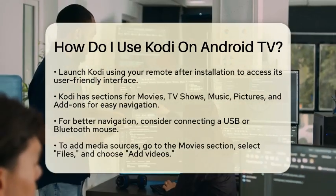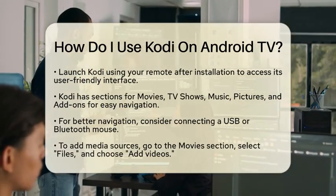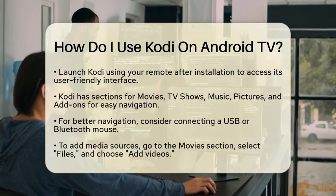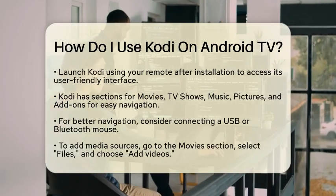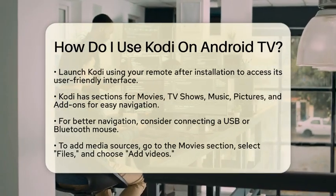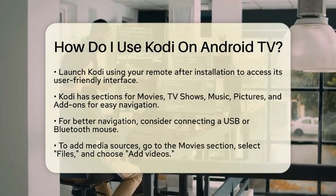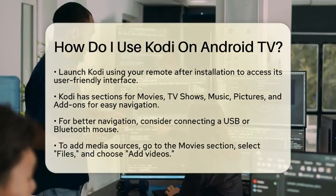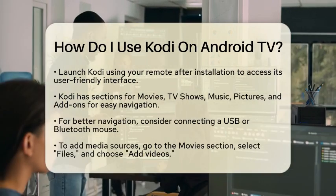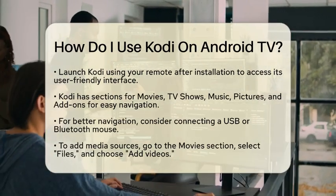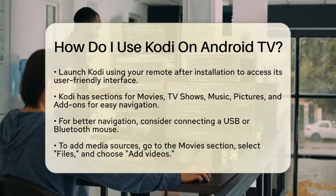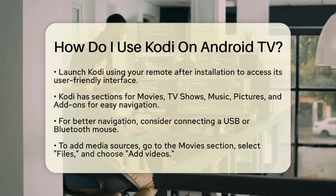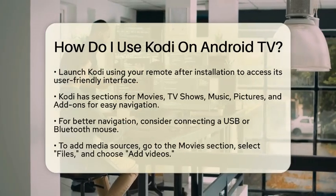After you have installed Kodi, it is time to set it up. Launch the application using your Android television remote. You will see a user-friendly interface with sections like movies, television shows, music, pictures, and add-ons. For easier navigation, consider connecting a USB or Bluetooth mouse, especially if you find the remote challenging to use.